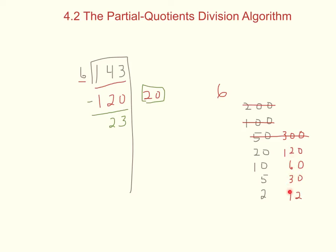I come back to my chart. I need to get close to 23, but 120, 60, and 30 are all too big, which leaves me with 12. I could use 12 or try to get even closer, but I'll just use 12. So I write the multiple 12 on the left side of the line, and since 6 times 2 is 12, my next partial quotient is 2. Then 23 minus 12 is 11.